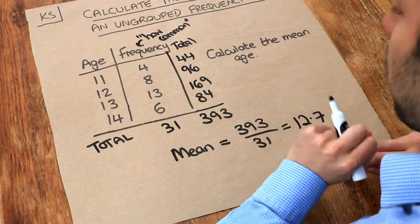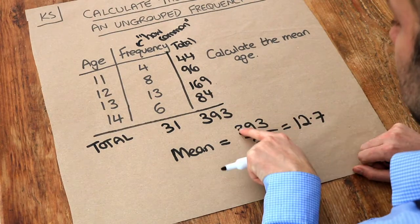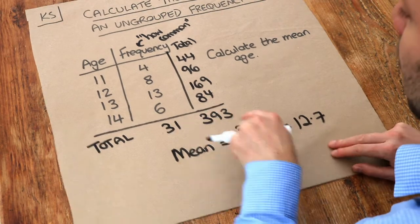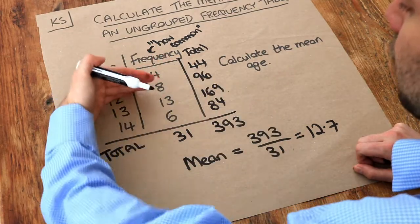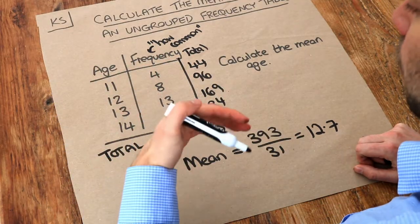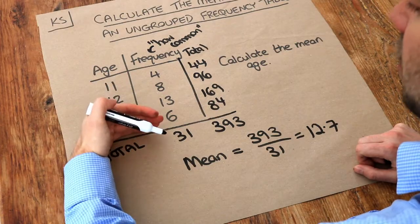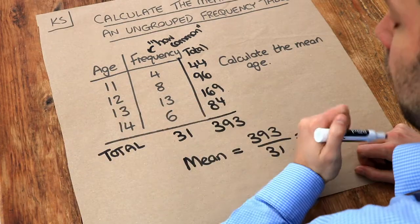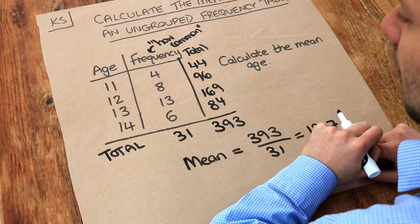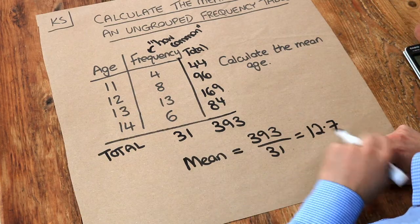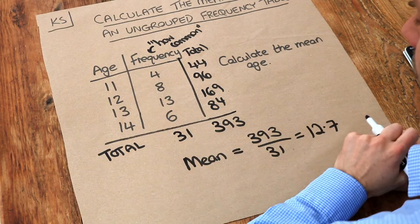Always check that. A very common mistake that students make is that they divide that total there, the 393, by 4 because they think there's 4 values. But 4 just means there's 4 different ages. That doesn't mean that we only have 4 people. We have 31 people. So make sure you divide by the total frequency. In this case 31.